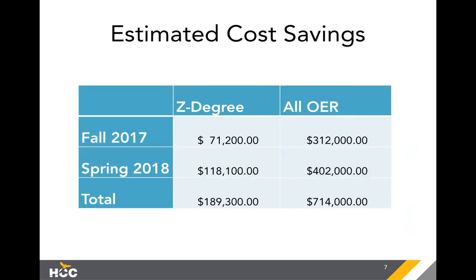When you look at estimated cost savings to students in the Z degree, we can pin this number down with some accuracy. We're assuming $100 per student per course as the average textbook cost — it's a standard figure people use. Using that assumption, over just fall and spring we've saved students close to $200,000.